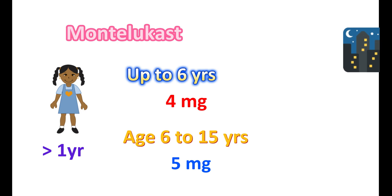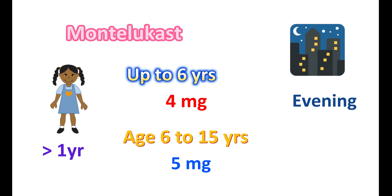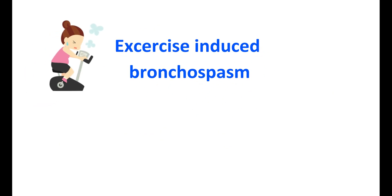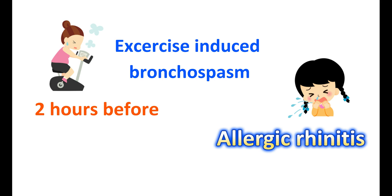It is always better to take Montelukast in the evening for better clinical response. For the treatment of exercise-induced bronchospasm, Montelukast should be given at least 2 hours before exercise. For the treatment of allergic rhinitis, similar doses are used — 10 mg for adults and 4 to 5 mg for children based on age. For allergic rhinitis, Montelukast can be given at any time of day; however, when combined with antihistamines, it is preferred to be taken in the evening.